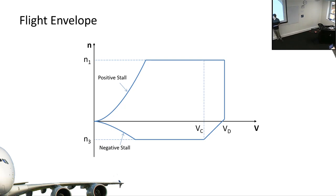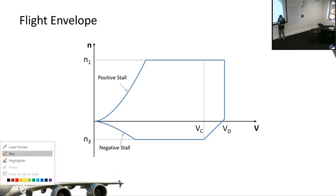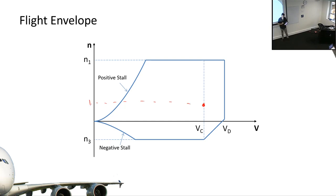Going along the speed axis, VC is our critical or cruise velocity - where the aircraft spends its time in straight and level flight. Straight and level flight lives at a load factor of one, because lift equals weight and you're feeling traditional 1g loads. That point is a fair way from most edges of the box, though not so far from the high-speed side - we have to fly fairly fast relative to the critical speed of the aircraft to get from point A to point B efficiently.